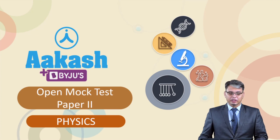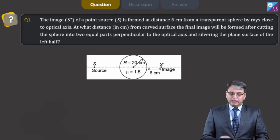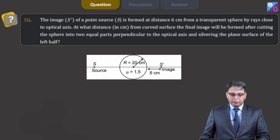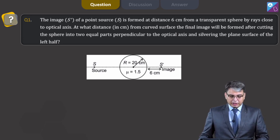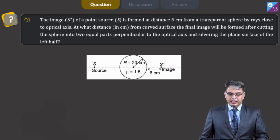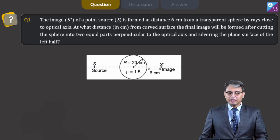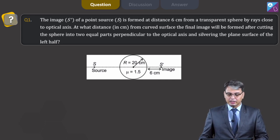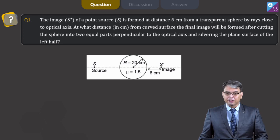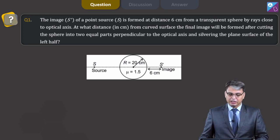Let us begin with discussing the questions. Here is question number 1. It says that the image S' of a point source S is formed at a distance 6 cm from a transparent sphere by rays close to the optical axis. At what distance in cm from the curved surface will the final image be formed after cutting the sphere into two equal parts perpendicular to the optical axis and silvering the plane surface of the left half?